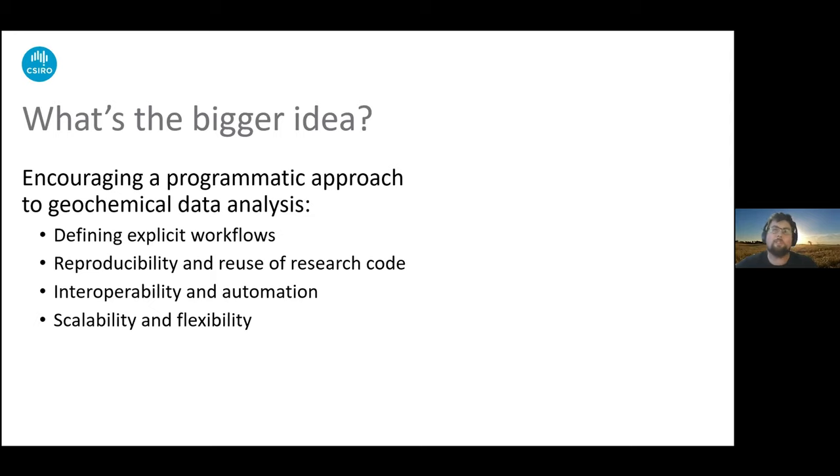And also try to encourage reuse of research code, so avoiding reinventing the wheel. You don't want to have 13 different versions of ternary diagrams that everyone has to remake themselves. The idea here is to link into an interoperable ecosystem so we can integrate with other systems and automate some things where it makes sense, and also scale and deal with bigger data sets and more varied data sets.